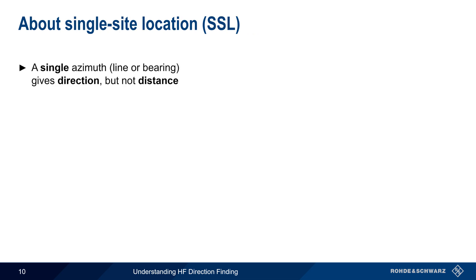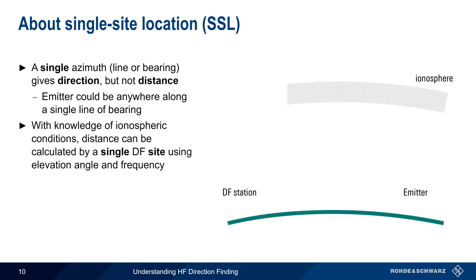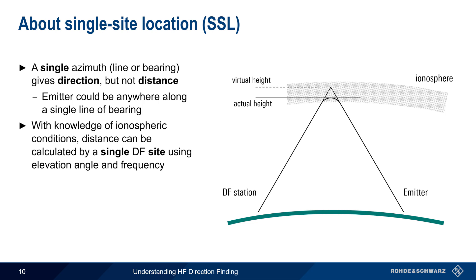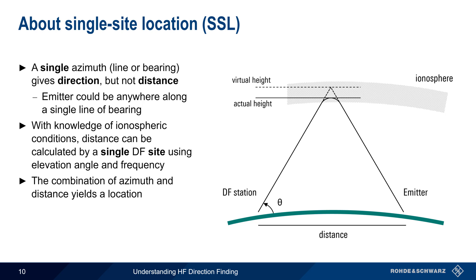Triangulation uses multiple stations because a single azimuth or line of bearing only produces a direction but not a distance — the target emitter could be anywhere along a single line of bearing. However, with knowledge of ionospheric conditions, it's possible to calculate the distance to an emitter from only a single site. Skywave signals are refracted from the ionosphere at a given actual height, and this can be used to derive a virtual height which would produce the same effect if the signal were specularly reflected at an angle. Using this height and the received signal's elevation angle, the distance to the emitter can be calculated. In this way, a single DF site can determine location from both azimuth and distance.